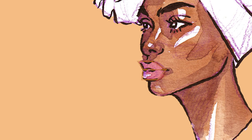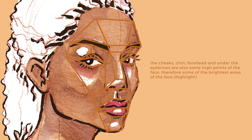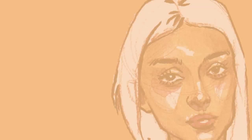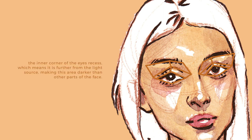Number two: the lips also have some volume to them. Lips can vary in thickness, therefore the volume and height also varies, but nonetheless lips tend to have height. Number three: the cheeks, the forehead, the chin, and under the eyebrow are also some of the high points of the face. And number four: the eyes are commonly sunken in compared to the other facial features. However, the degree of this can vary based on different eye shapes. Nonetheless, the fact that the inner corner of the eyes recess means that it is farther from the light source, therefore making it a commonly dark area.